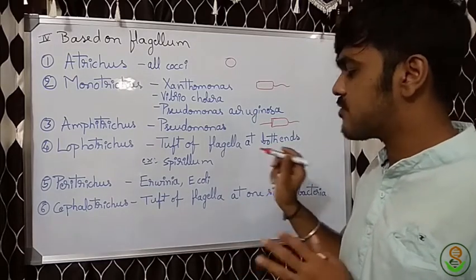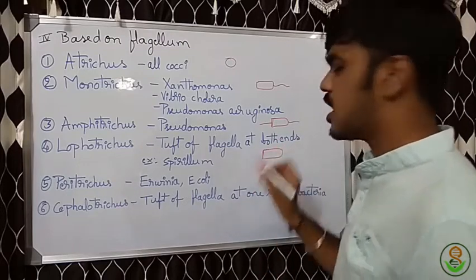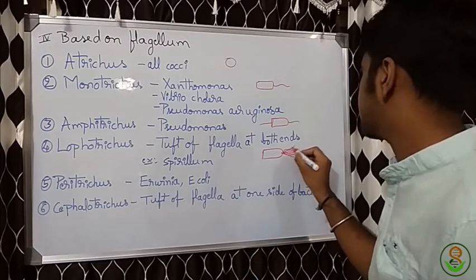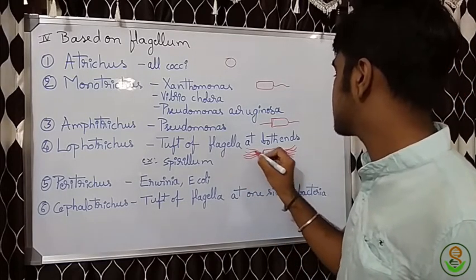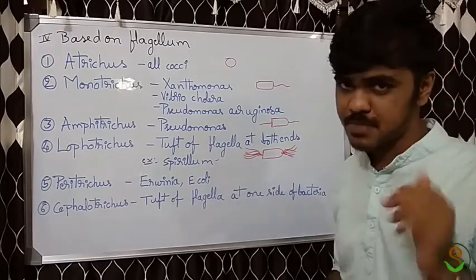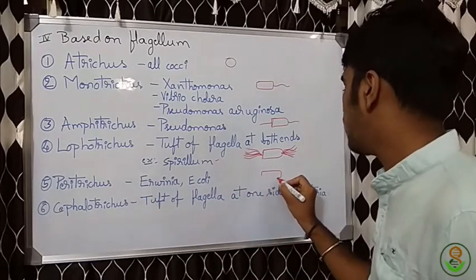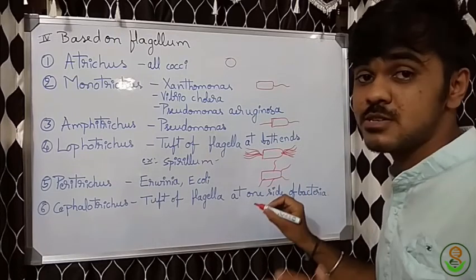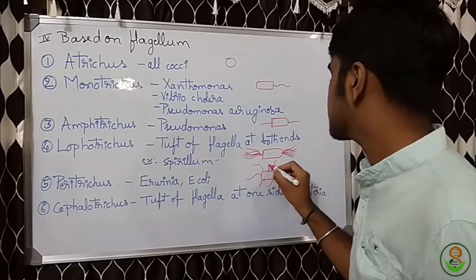Lophotrichous contains a tuft of flagella — that means many flagella beginning from one end, present in both directions. This is the lophotrichous arrangement and example is Spirillum. Next comes peritrichous — peritrichous means flagella are present all over the body, so the bacterium can move in any direction and at any angle. That is the very usefulness of this arrangement.